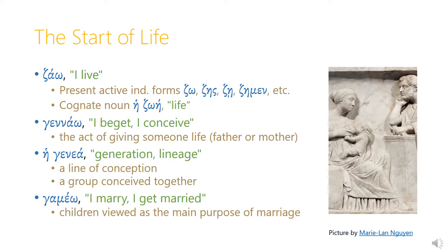The verb ganao speaks of the start of life and means 'I beget' or 'I conceive.' This is really the act of giving someone life, whether it's the father doing it or the mother doing it. In English we use different verbs for giving birth or for fathering a child, but in Greek one verb is used both for the father's contribution and the mother's contribution.